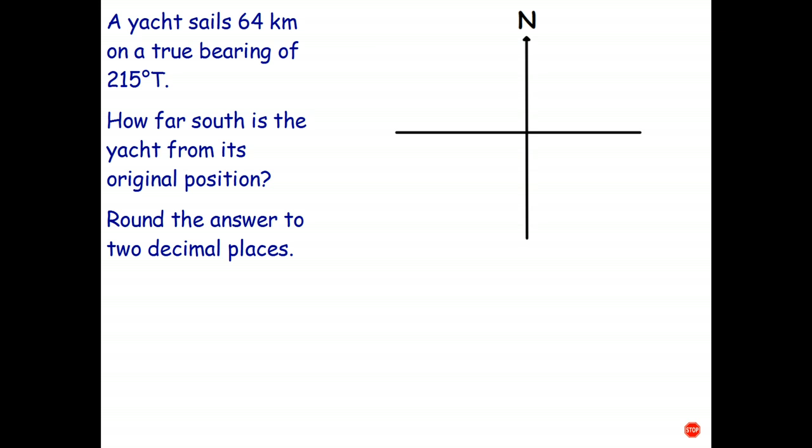So the question is: a yacht sails 64 kilometers on a true bearing of 215 degrees true. How far south is the yacht from its original position? Round the answer to two decimal places. Well, the first thing you always have to start with is basically your directions, a little compass. So an arrow pointing north and then east west.